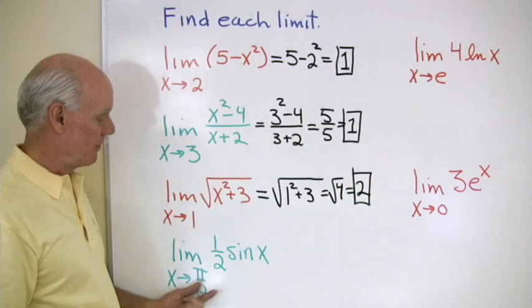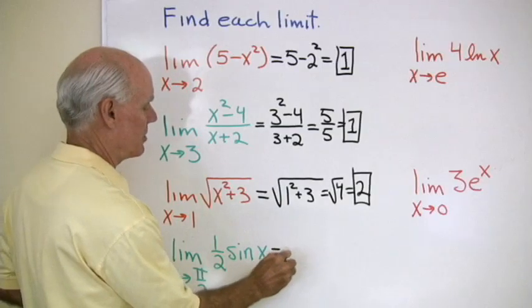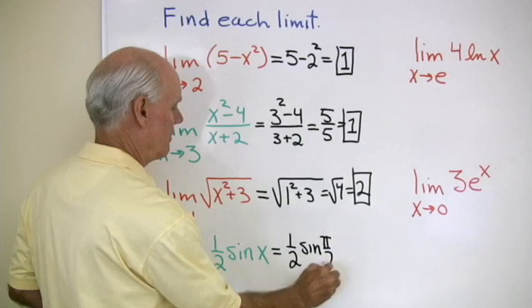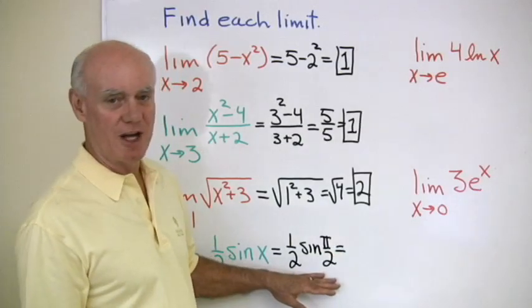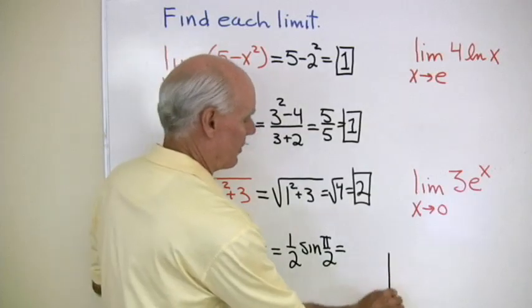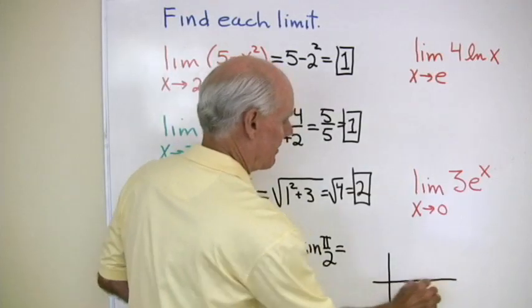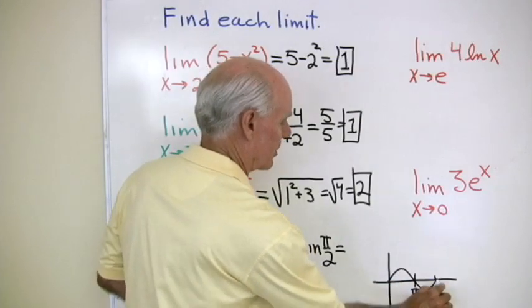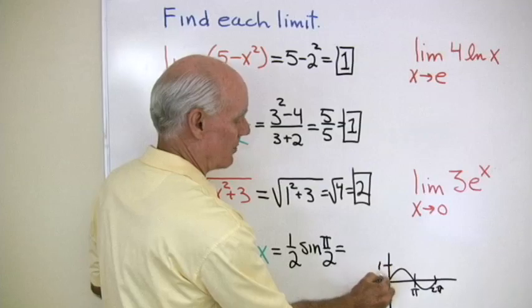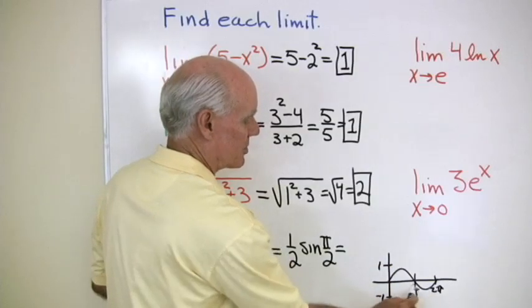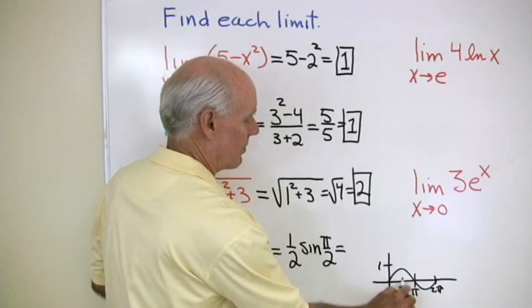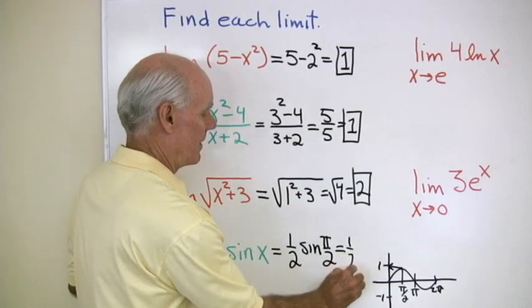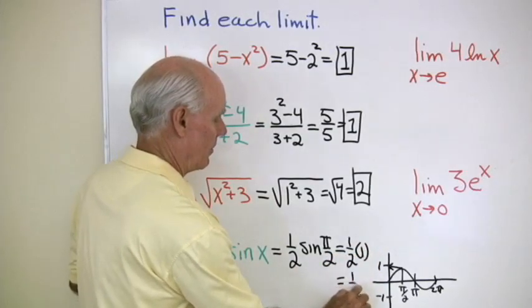How about as x goes to π/2 of (1/2)sin(x)? That's a trig function — one of the ones in my list. Remember what to do with sin(π/2)? You can always go to your sine graph. Draw one complete cycle of the sine curve — it goes up to 1 and down to negative 1. At π/2, the trig function equals 1, so I have 1/2 times 1, and that's just 1/2. So that limit turns out to be 1/2.